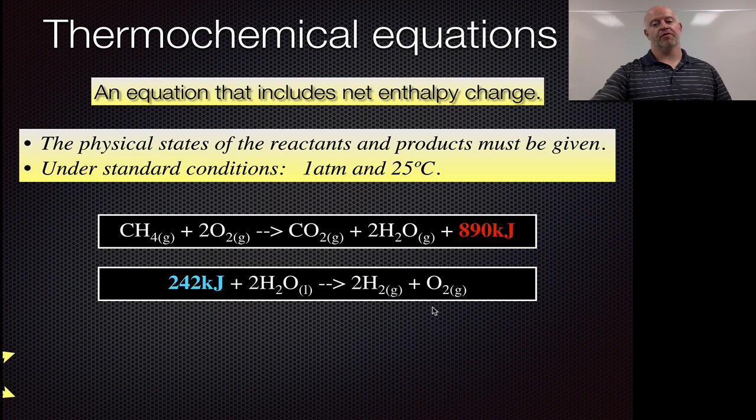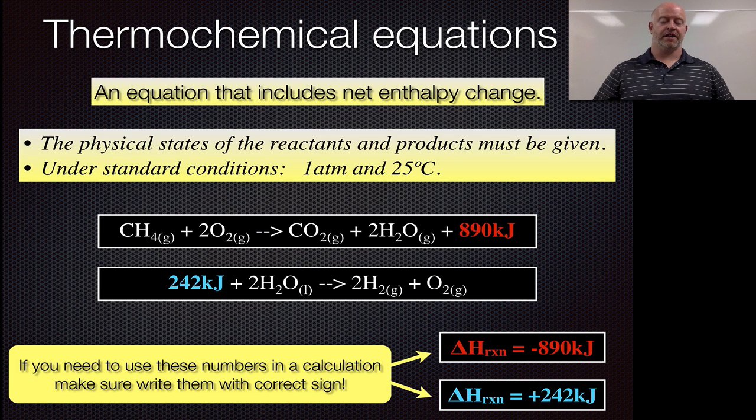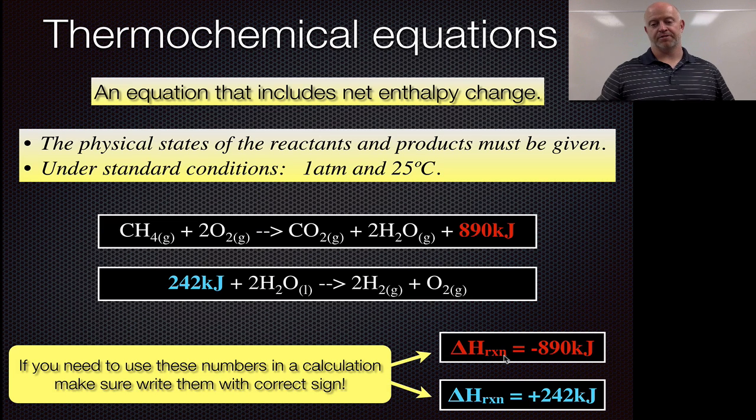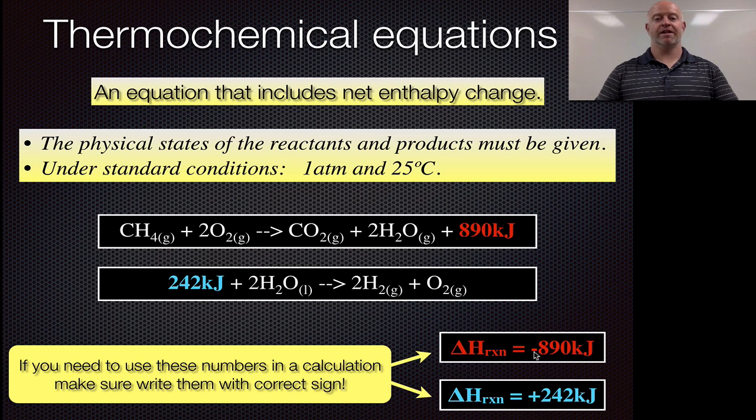Now one thing you may be careful of and make note of is that when you use them in a mathematical calculation, and we start talking about the enthalpy change for the reaction, RXN stands for reaction. So the enthalpy change for the reaction, this reaction has a negative 890 kilojoules. It's negative because it's exothermic, showing it's going to release energy. This reaction is absorbing it, so it's a positive 242 kilojoules of energy.